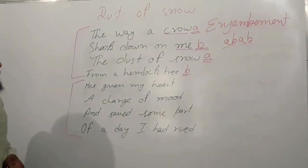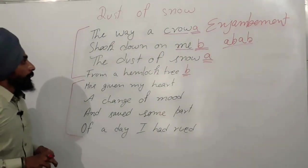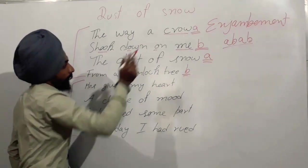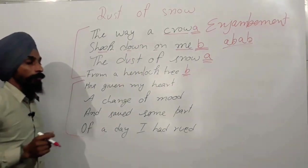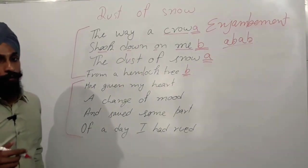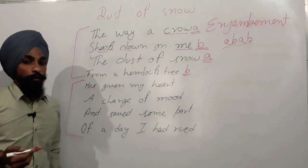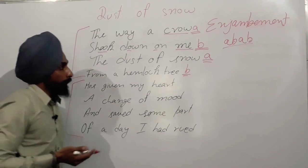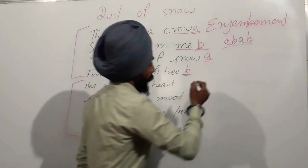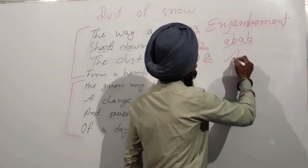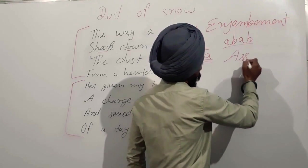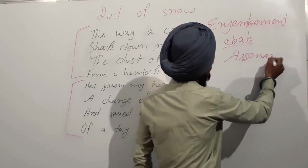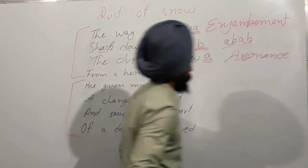If we talk about literary devices: 'shook down on me' — the vowel sound is repeated in one line. When the same vowel sound is repeated in a line, the literary device is called assonance.